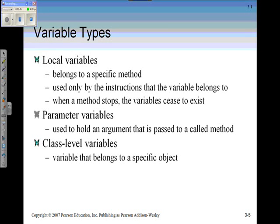With the class level variables, those are variables that belong to a specific object. These you might want to think of as the object's properties. So the color is a class level variable. Opacity is also a class level variable.